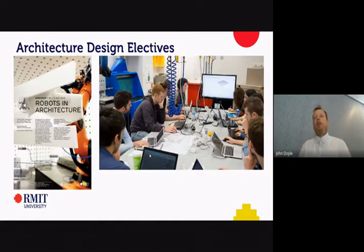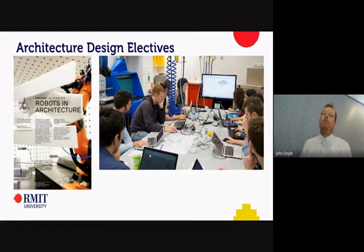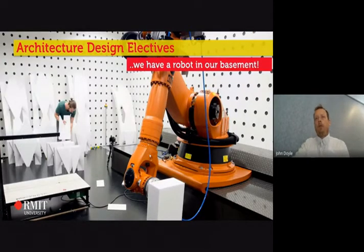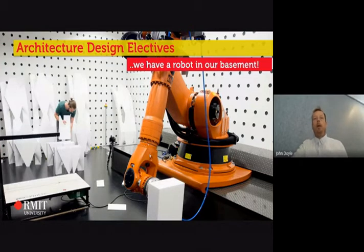Now for our design electives — another opportunity to do interesting things that dovetails into research projects our university is working on. A lot of our electives deal with our robotics workshop in the basement of the building. We run a series of workshops in collaboration with ETH Zurich where you get to learn and use the five-axis KUKA robot. We have a number of these in our basement, and they are always being updated. In this case they developed a tool head for cutting foam into complicated forms, but lately we've been doing a lot of work with clay and plastic printing.